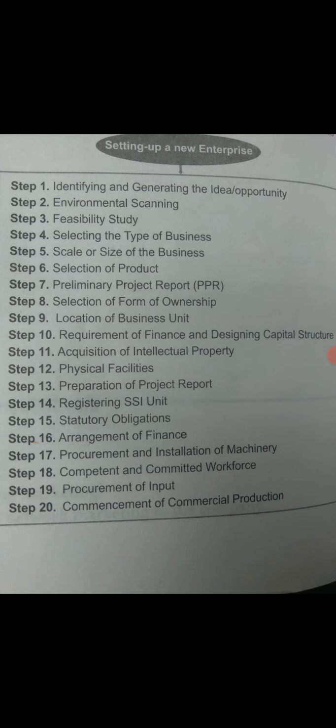The fifteenth step is statutory obligations. The entrepreneur must follow various statutory obligations, such as obtaining a municipal license from the municipality where the business will operate, applying for power connections, registering under the State Shops and Establishment Act, obtaining an NOC for pollution control, applying for ISI certification if quality control is followed in manufacturing, fulfilling tax-related formalities, applying for a PAN, registering with the RTO for heavy vehicles, and registering under the Factories Act.